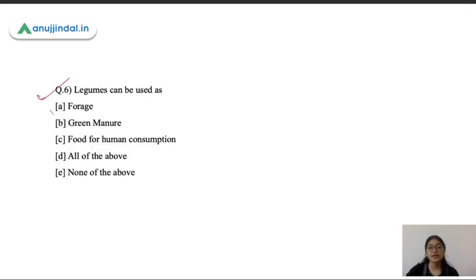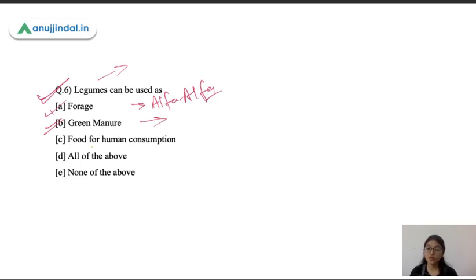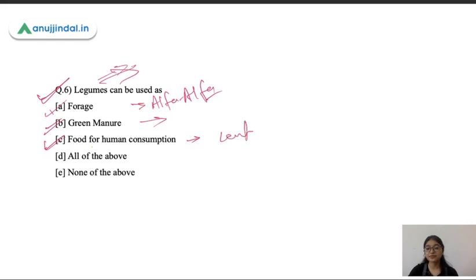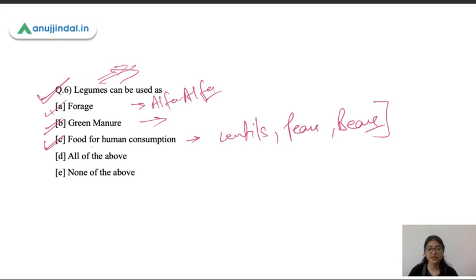The next question is: legumes can be used for what? Legumes can be used as forage — yes, alfalfa is a legume used as a forage or fodder crop. They can also be used as green manure, where these crops are incorporated into the soil to increase its texture and organic content, and they help in nitrogen fixation in the soil. Legumes like lentils, peas, and beans are also used as food for human consumption. So all these options are correct.